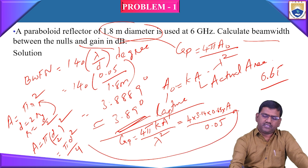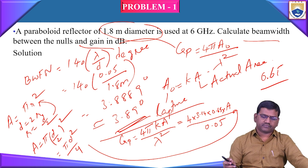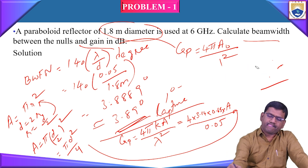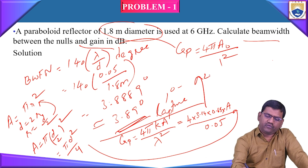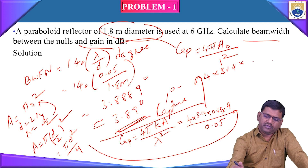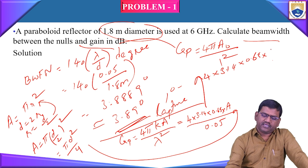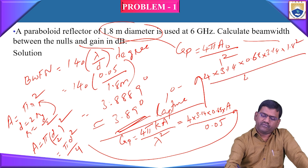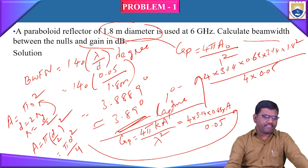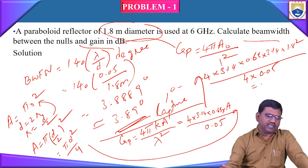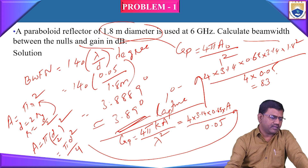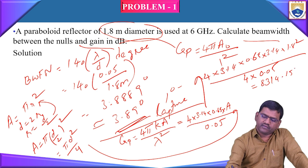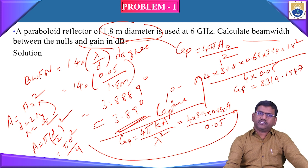Substituting A = πd²/4 into the power gain formula, we get Gp = 4π × 0.65 × πd²/4 ÷ λ². Substituting values: 4 × 3.14 × 0.65 × 3.14 × (1.8)² / (4 × 0.05²), which simplifies to 8314.1547. This is the decimal value of Gp.